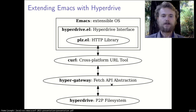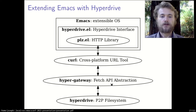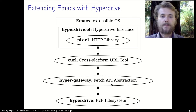Here's how hyperdrive.el works under the hood. It uses plz, the HTTP library that Adam Porter wrote, to send requests via curl to hypergateway. Hypergateway is a program that Moeve Signweaver wrote, which runs a hyperdrive node under the hood. It also runs a local HTTP server which accepts requests to control the node. For example, if hyperdrive.el wants to show a file from someone's hyperdrive, it sends the appropriate link via curl as a GET request to hypergateway. Hypergateway then fetches the data from the network and returns it via curl, via plz, back to hyperdrive.el. If hypergateway already has a locally cached copy, it doesn't bother checking the network — it just sends it straight away.